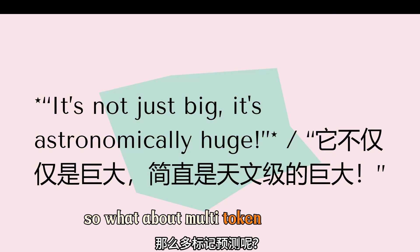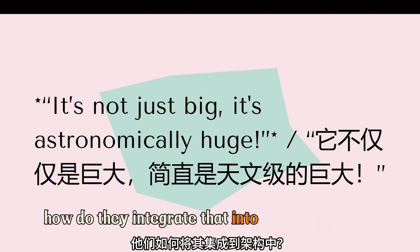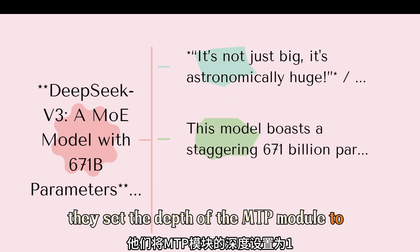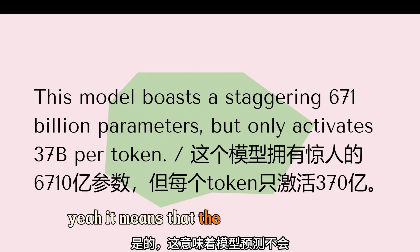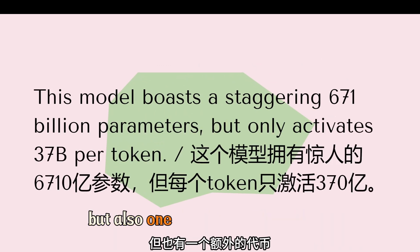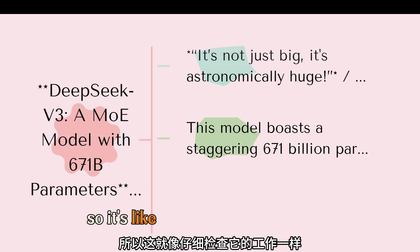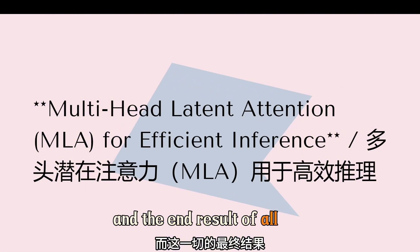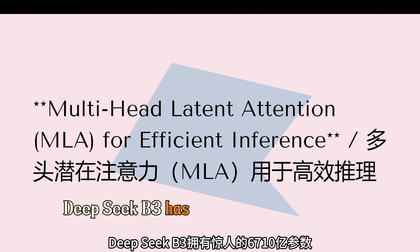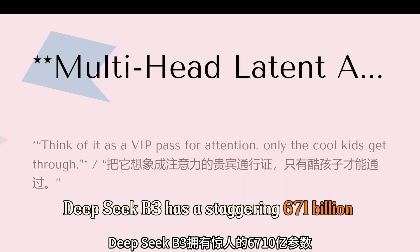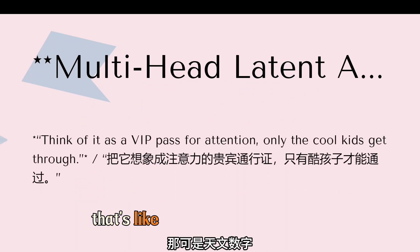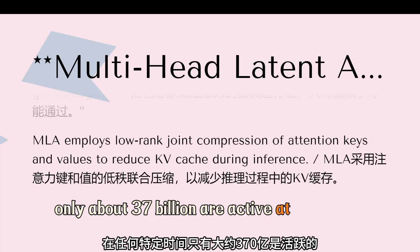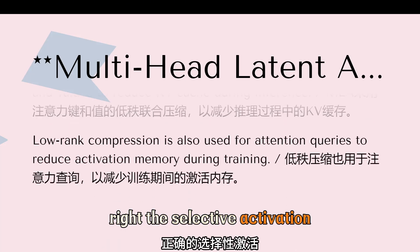For multi-token prediction, they set the depth of the MTP module to one, meaning the model predicts not only the next token but also one additional token ahead — like double-checking its work, making sure it really understands the context. The end result of all this is that DeepSeek V3 has a staggering 671 billion parameters, but only about 37 billion are active at any given time through selective activation. That's how they keep it efficient.